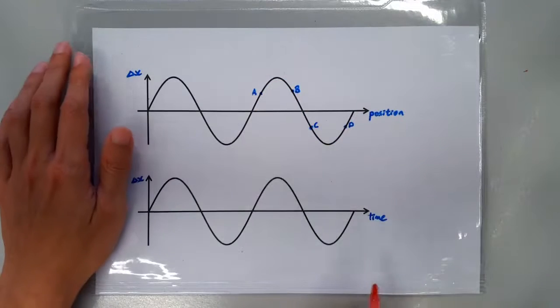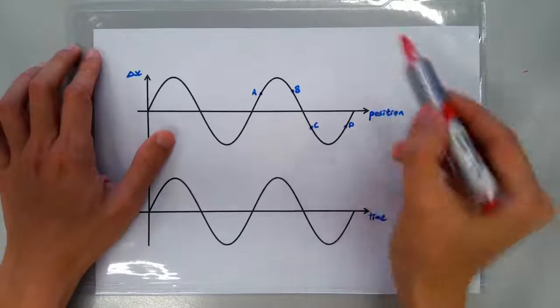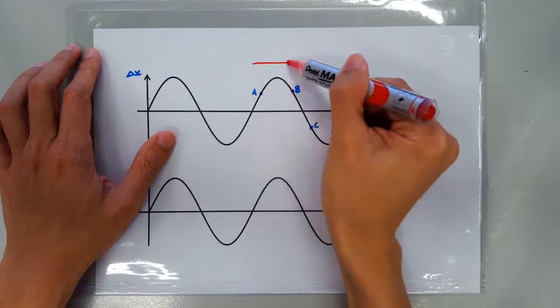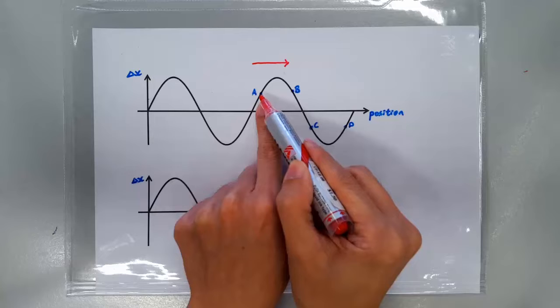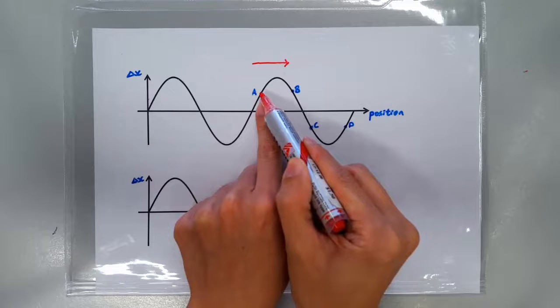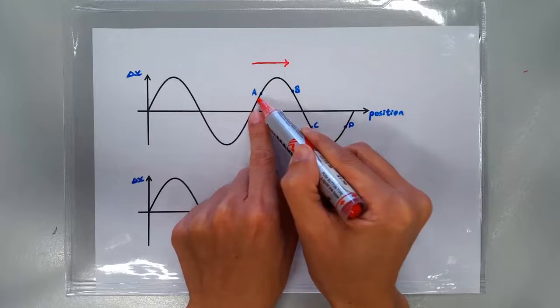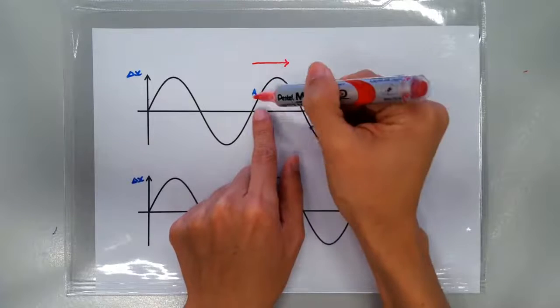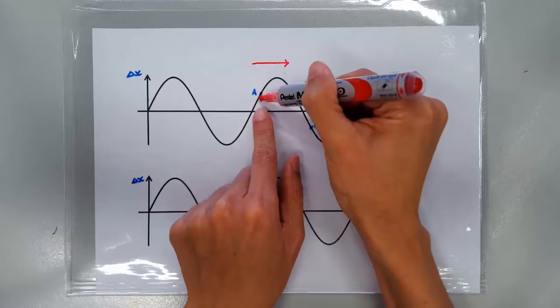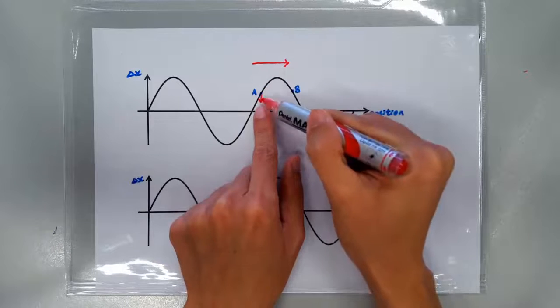An even easier method is to remember that if the wave is progressing towards the right, then every point on the wave is lagging its leader on the left by a bit. So if I'm here, and I lag the guy on my left, that means I'm going to be him soon, right? So I'm on the way down.